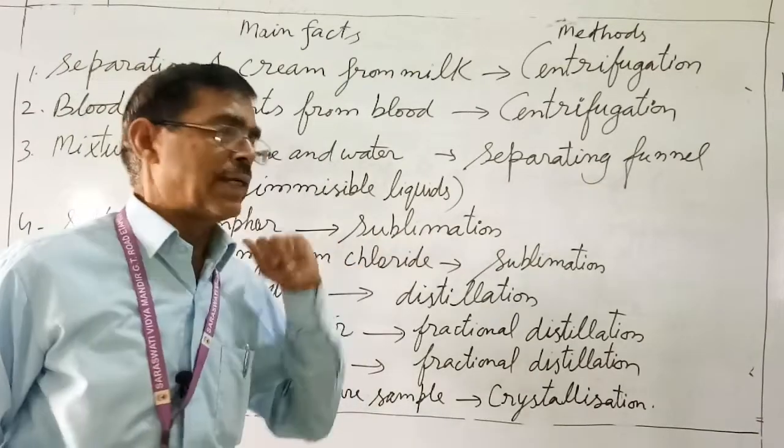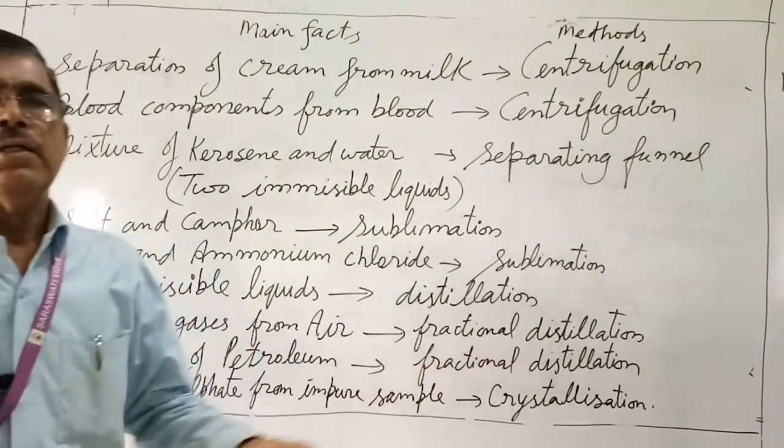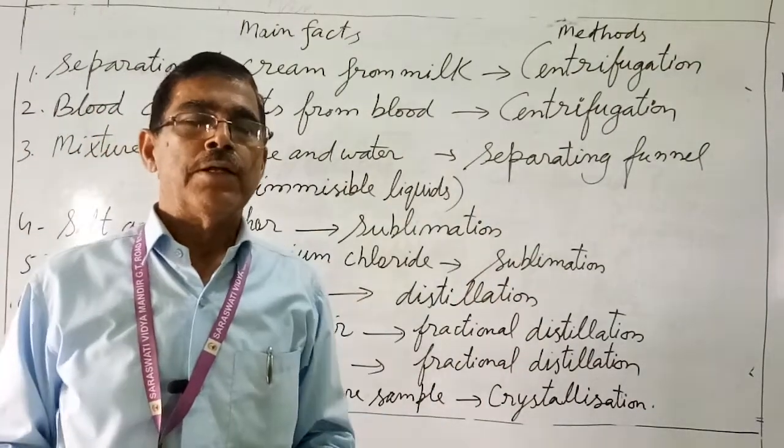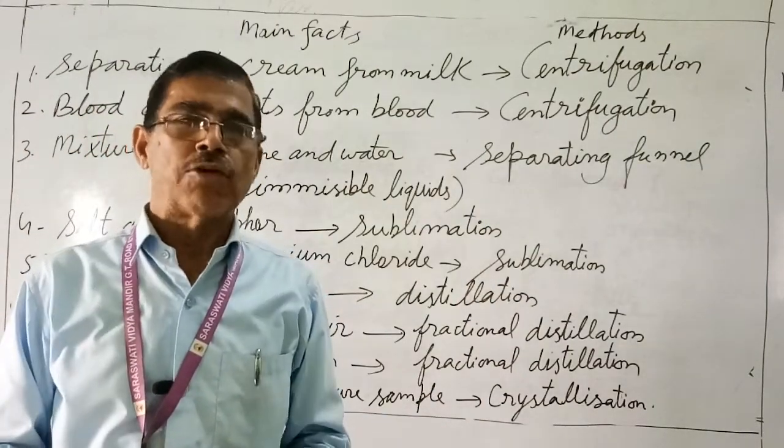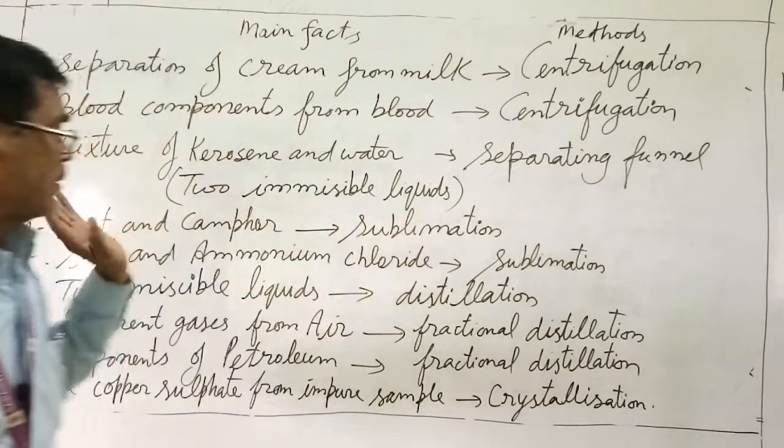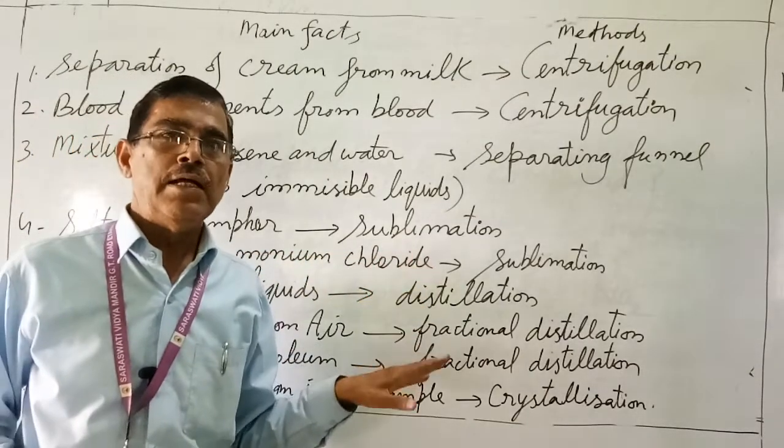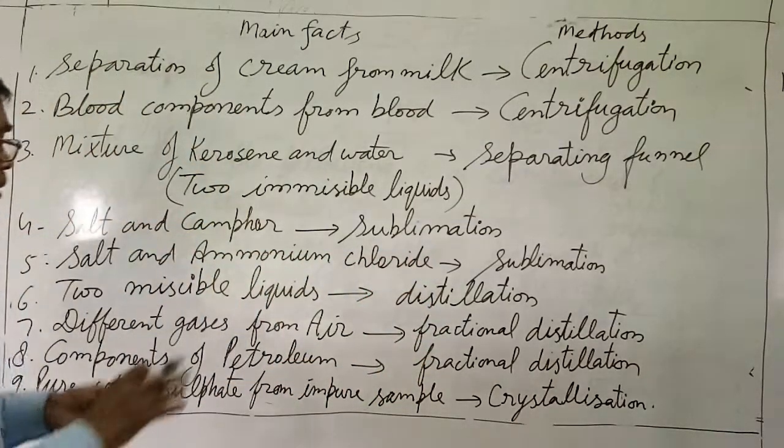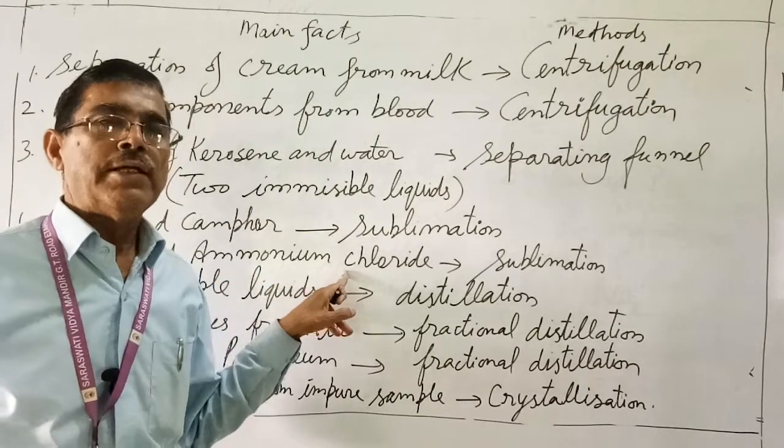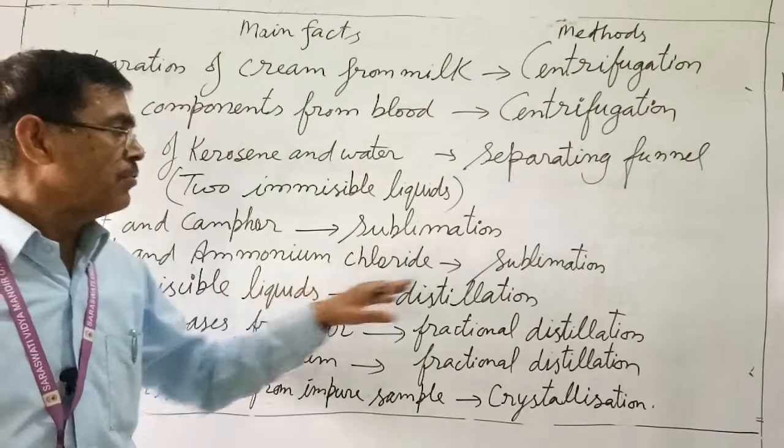Sublimation - directly solid to gaseous will change without liquid state. Directly changes to gaseous. So camphor and ammonium chloride undergo sublimation. This is the sublimation process.